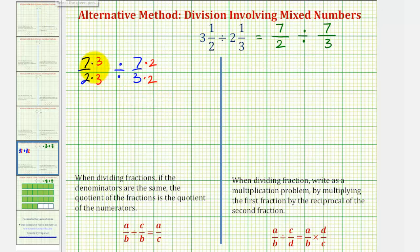So now we have 21-sixths divided by 14-sixths. If we want to determine how many 14-sixths there are in 21-sixths, and because our denominator is the same, the quotient is just the quotient of the numerators. We would have 21 divided by 14.